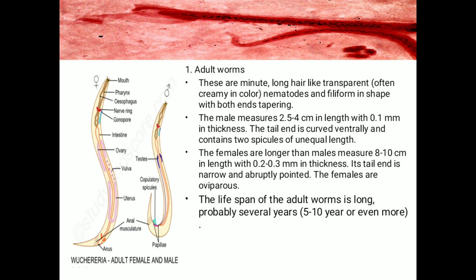This is what W. bancrofti adult worms look like. They are minute, long, hair-like, light, transparent, often creamy in color, nematode filiform worms in shape with both ends tapering. The male measures 2.5 to 4 cm in length with 0.1 mm in thickness, and the tail end is curved ventrally, containing two spicules of equal length. The female adult worms measure up to 8 to 10 cm in length with 0.2 to 0.3 mm in thickness — in other words, the female adult worms are longer and thicker than the male adult worms.